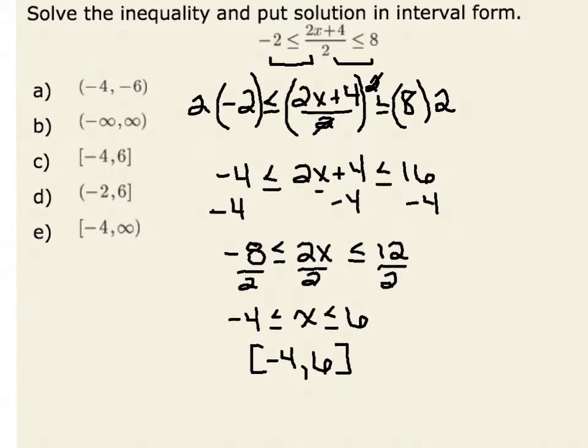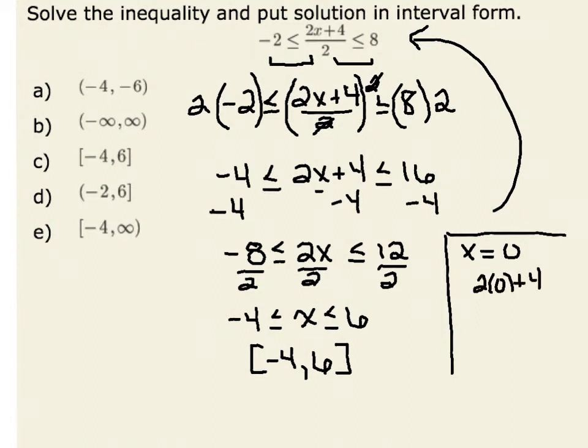Any value between negative 4 and 6 will satisfy the compound inequality. We can check this. For example, if I let x equal 0, since 0 is between negative 4 and 6, I substitute it back into the original inequality. I want to verify I get a value between negative 2 and 8. We see that 2 times 0 plus 4 divided by 2 equals 2. Indeed, 2 is less than or equal to 8, and 2 is greater than or equal to negative 2.